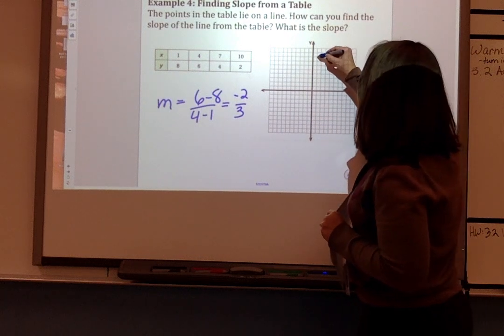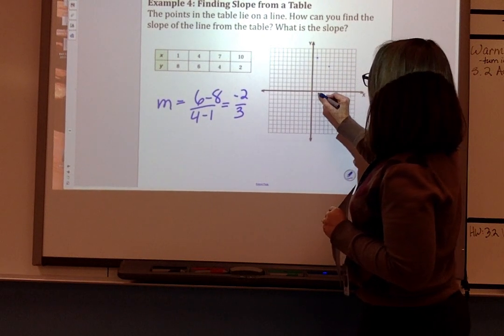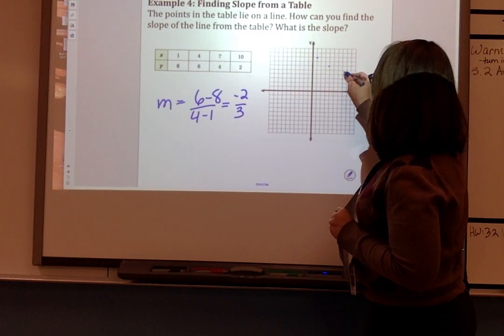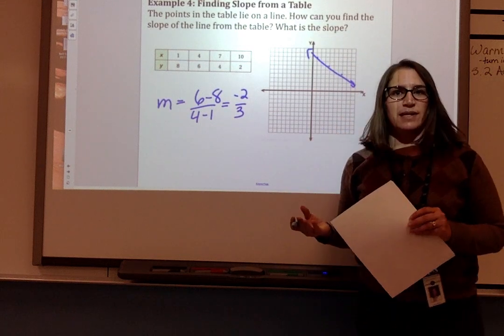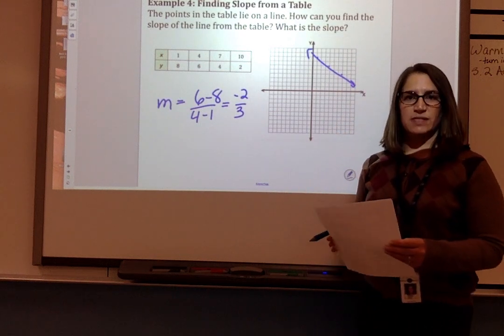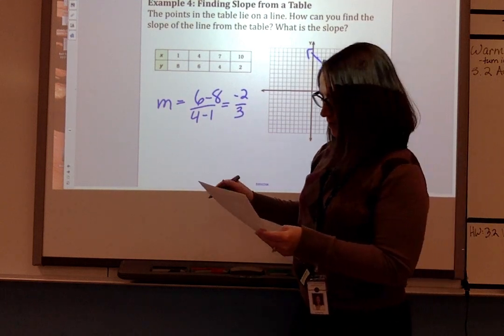I can also graph the points: 1, 8; 4, 6; 7, 4. And I can sketch the line and see this does appear to be a negative slope. It's not a very steep slope. It has an absolute value less than 1, so it's more of a shallow slope.